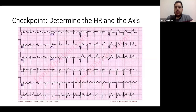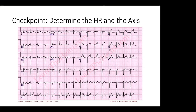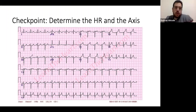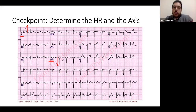Checkpoint example: looking at an ECG to determine heart rate and axis. Lead one is positive, AVF is negative — they are in opposite directions, so this is a left axis deviation. If it were normal, AVF should also be positive. For heart rate, counting the big boxes between RR: one, two, three big boxes, so 300 ÷ 3 = approximately 100 beats per minute.